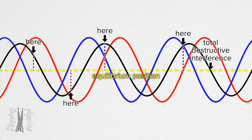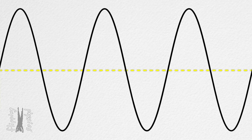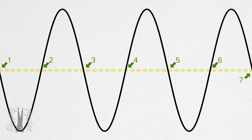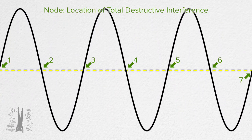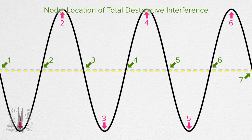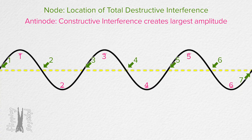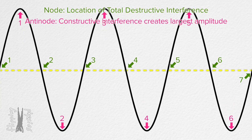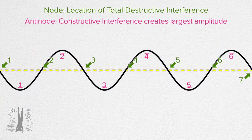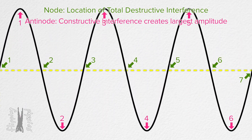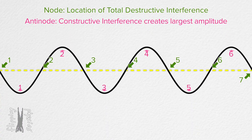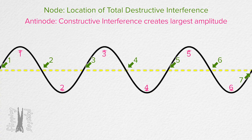I want to identify some specific locations on the standing wave pattern. On this standing wave pattern, there are seven locations of total destructive interference — those are called nodes. There are also six locations between the nodes called antinodes, where the waves create a larger amplitude wave via constructive interference. Nodes are locations of total destructive interference where the standing wave is always at equilibrium, and antinodes are locations where there is a large amplitude due to constructive interference.